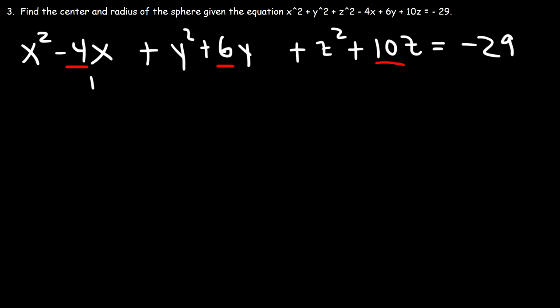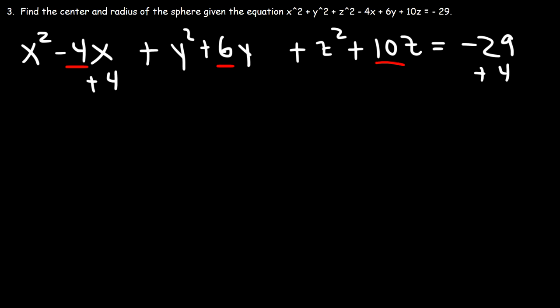Now we need to complete the square. We focus on the middle coefficients in front of the variables x, y, and z. Half of negative 4 is 2, and 2 squared is 4, so we add 4 to both sides. To complete the square with y squared plus 6y, half of 6 is 3, and 3 squared is 9, so we add 9 to both sides. For z squared plus 10z, half of 10 is 5, and 5 squared is 25, so we add 25 to both sides.